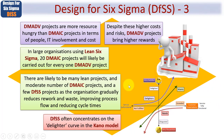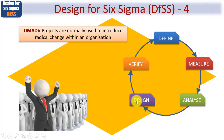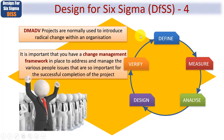Design for Six Sigma often concentrates on the Delighter curve in the Kano model — here's a graphic showing what it looks like. The Kano model is covered in detail in our Lean Six Sigma Masterclass. DMADV projects are normally used to introduce radical change within an organization, so it is important that you have a change management framework in place in order to address and manage the people issues that are so important for the successful completion of your project.